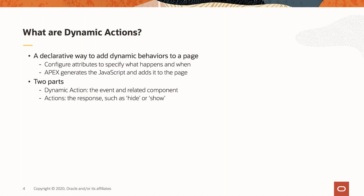The first and easiest way to add JavaScript to an Apex application is not to do it at all, and that's what dynamic actions are all about. Dynamic actions are a declarative framework within Apex that allow you to configure attributes to specify what you'd like to have happen and when. Apex will generate the JavaScript code for you and add it to the page for execution. You can think of dynamic actions as two parts: the dynamic action, which is the parent, is where you specify the event and a related component, such as the click of a button or the change of an item's value. The actions can be thought of as the children, and that's where you specify the response to the event — perhaps hiding or showing an item or region on the page.